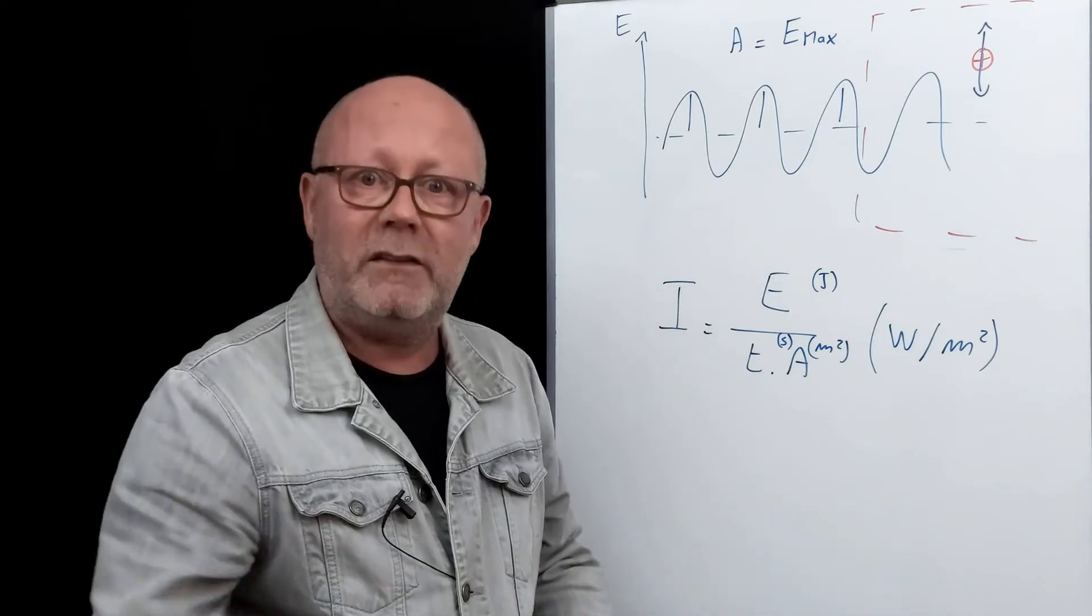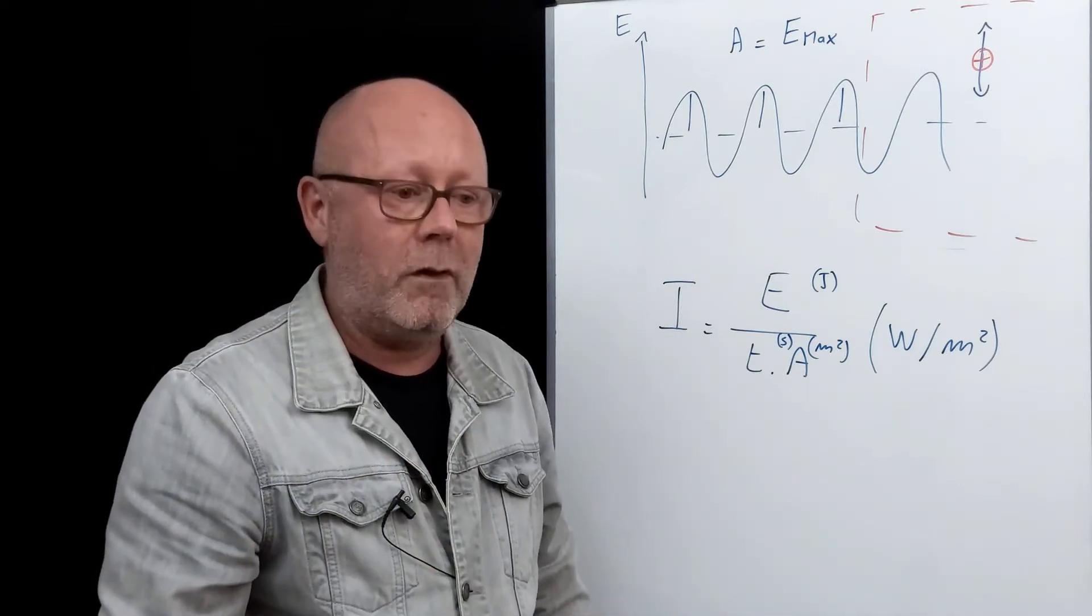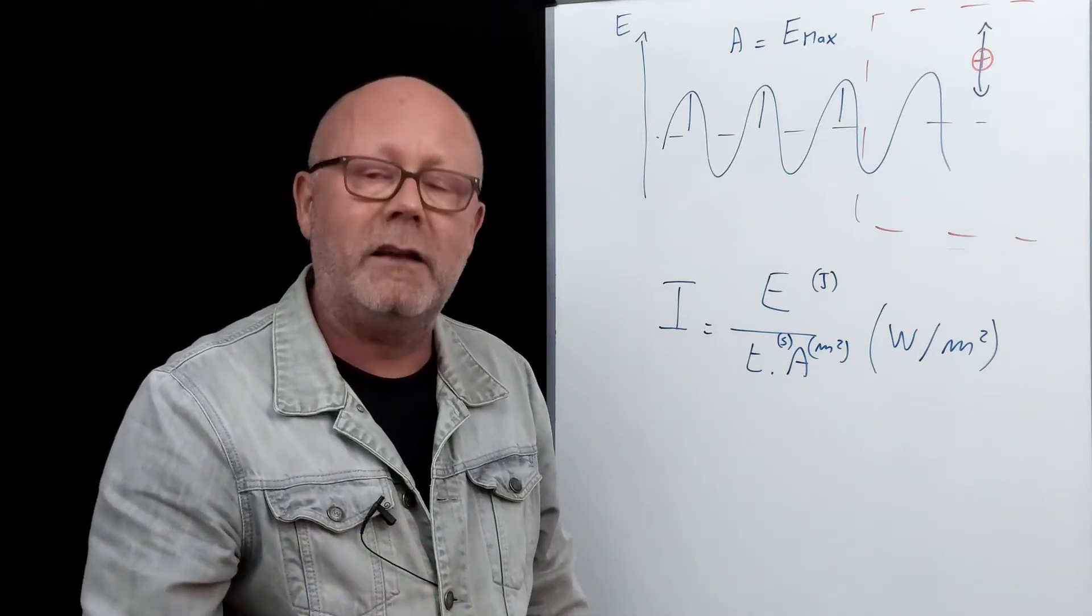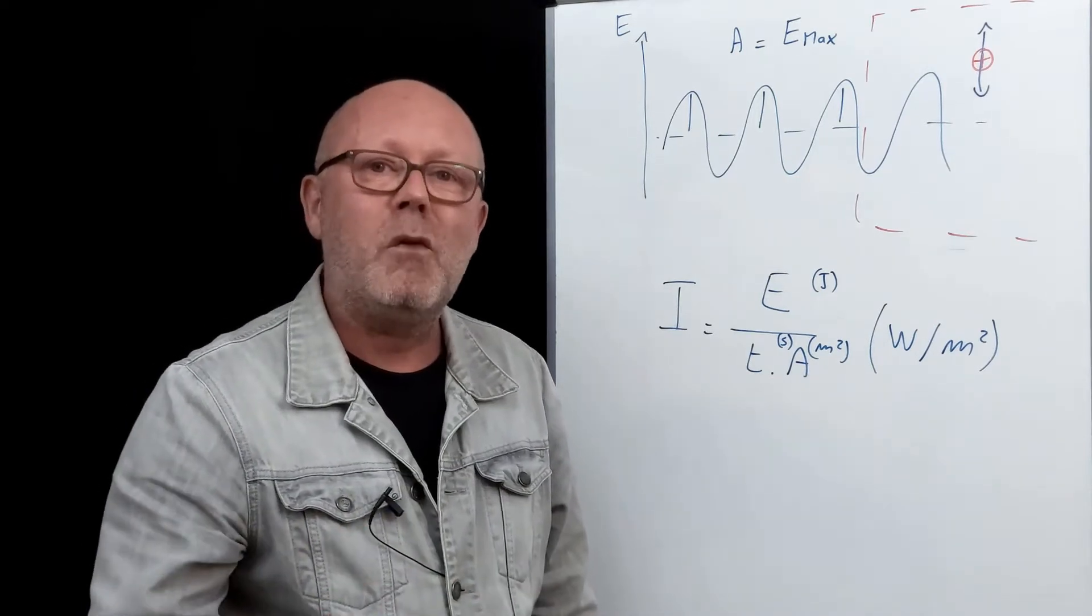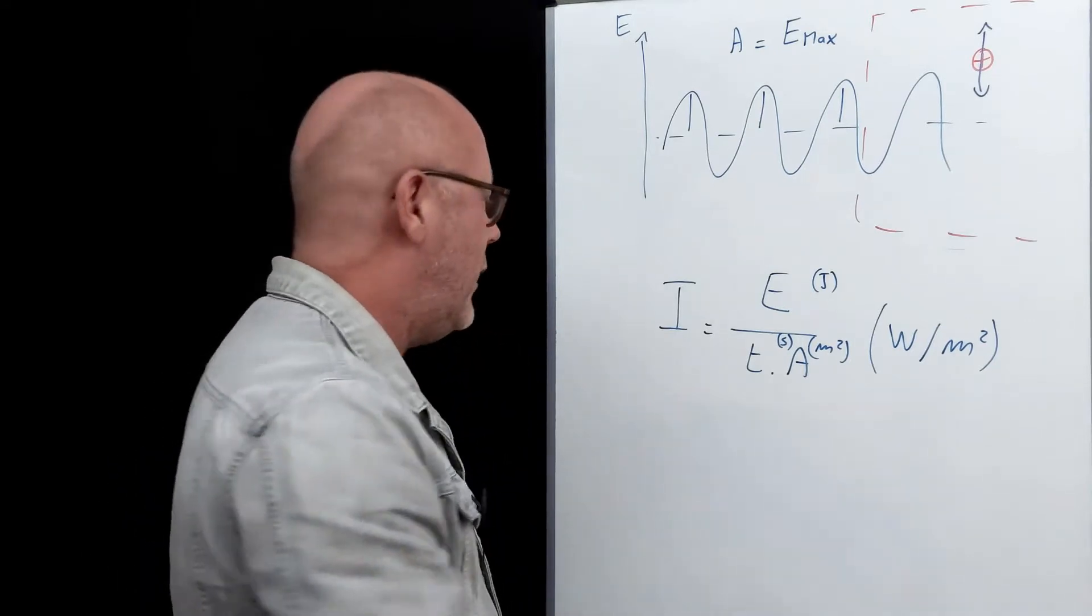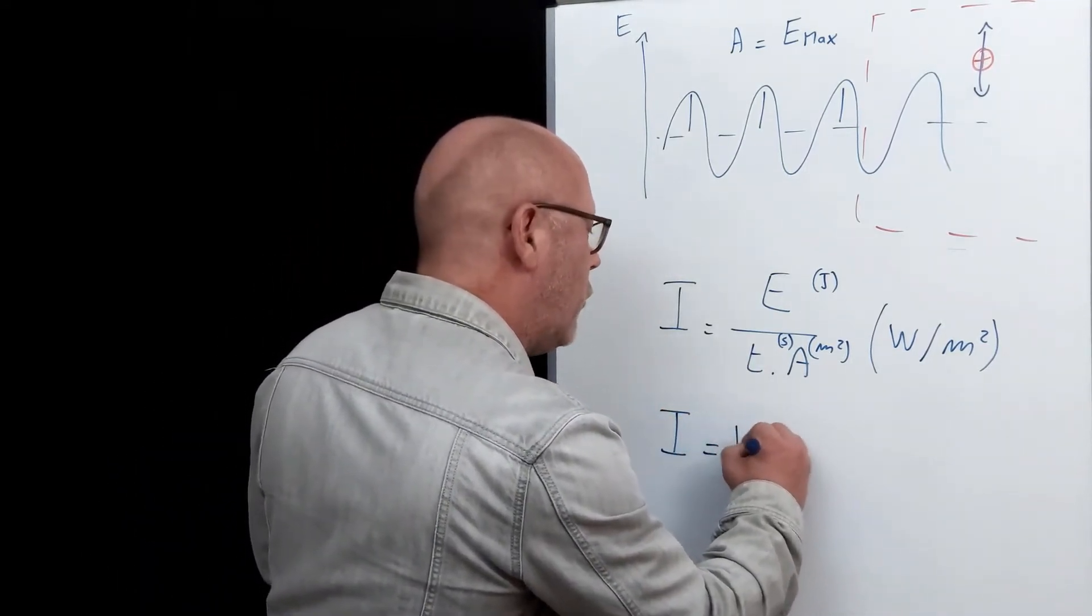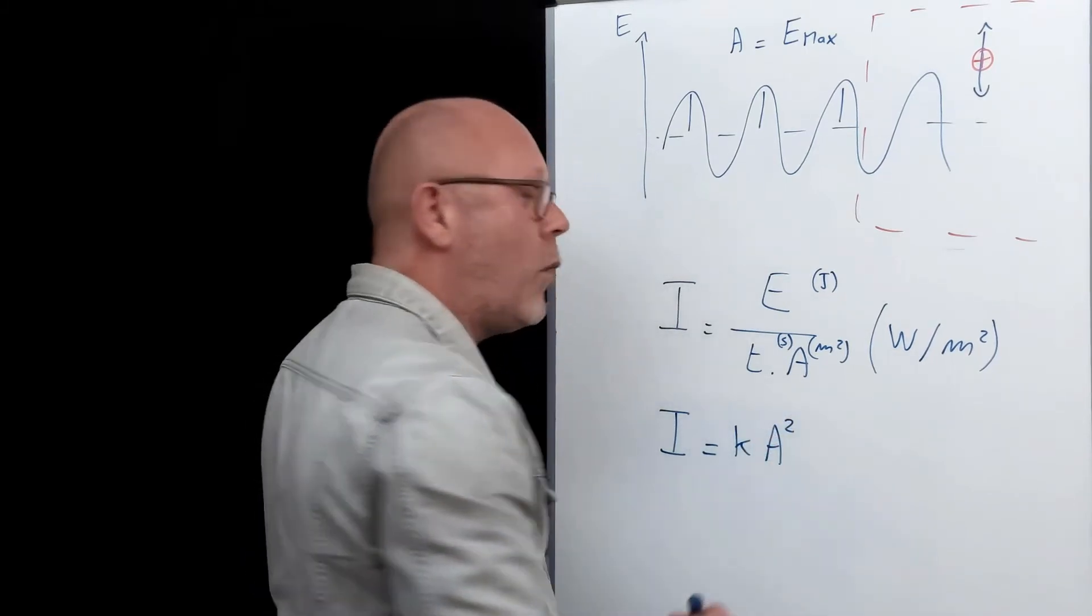If you have a surface illuminated by a lamp, for example, and the surface is very bright, it means that the intensity of the light is large. If you want to quantify the energy carried by a wave, you can consider therefore the intensity, and it is proportional to the square of the amplitude of the wave.